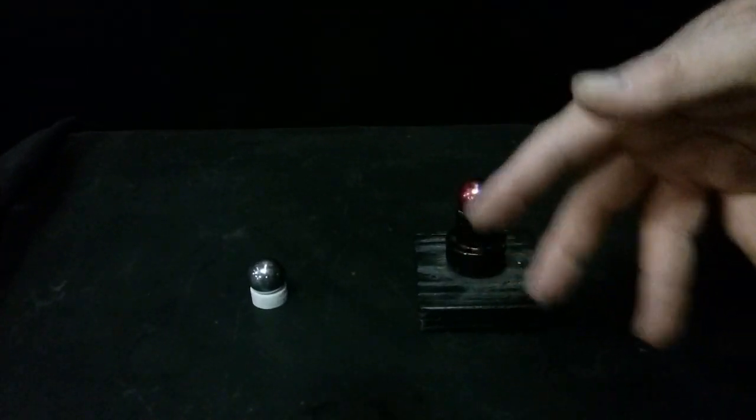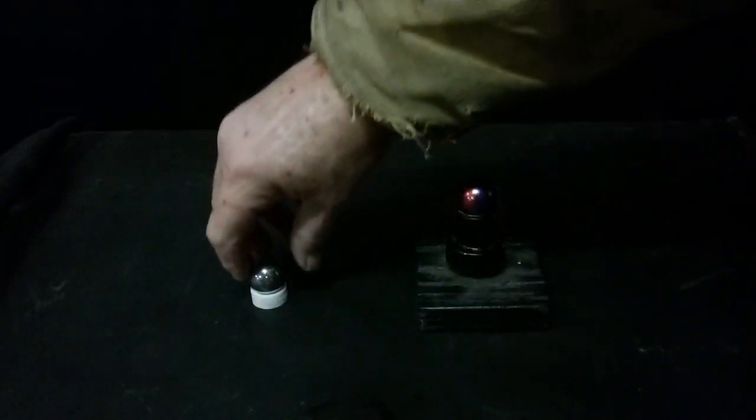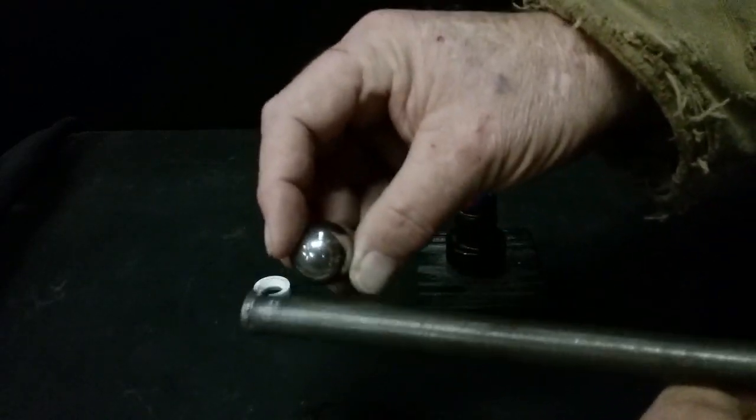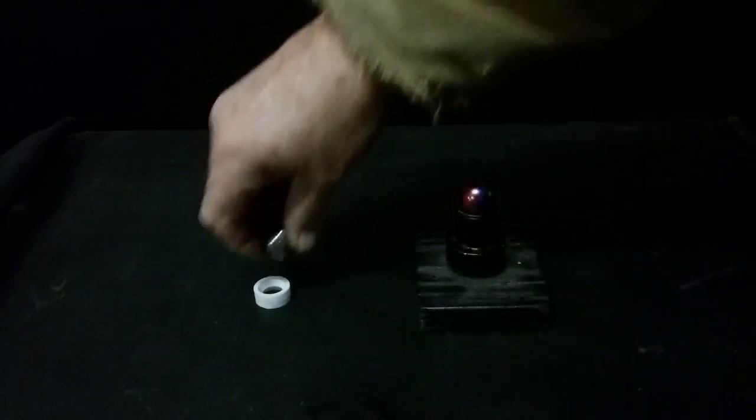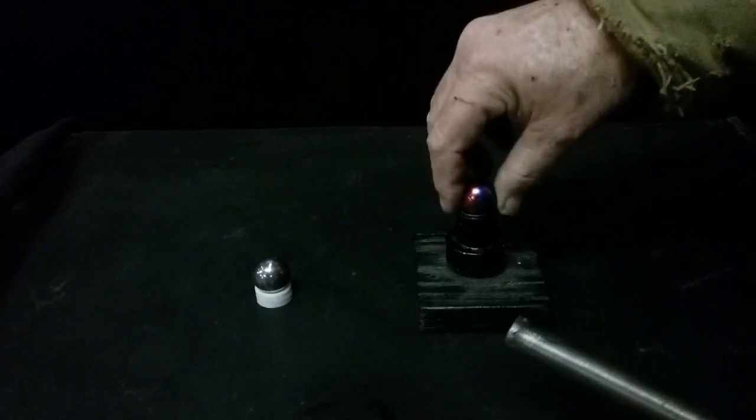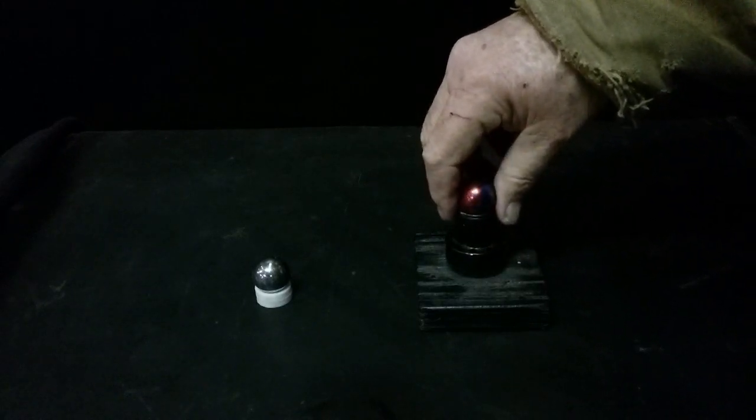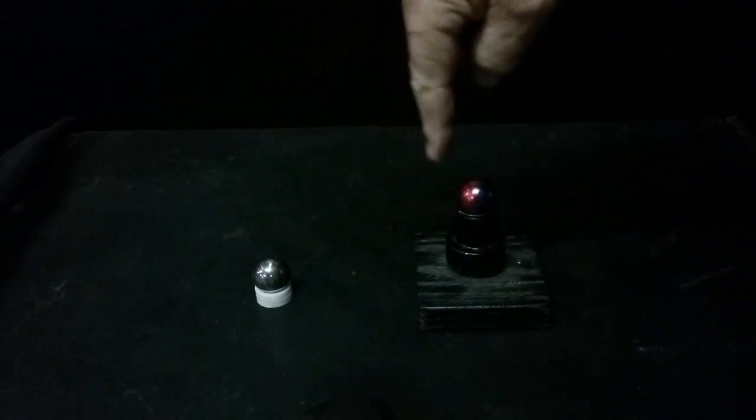This little demonstration is to show you the difference between this steel ball, which is not magnetized so it doesn't stick to this steel bar, and this one which is magnetized. The difference is they're both one inch steel balls.